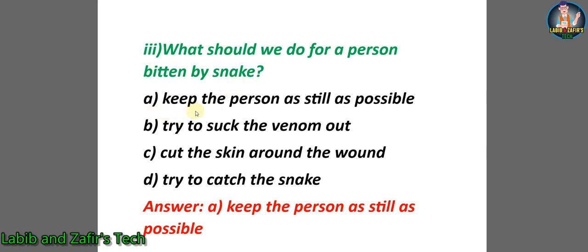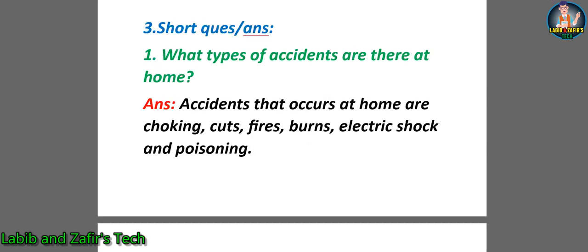Number three: What should we do for a person beaten by a snake? A) Keep the person as still as possible. B) Try to suck the venom out. C) Cut the skin around the wound. D) Try to catch the snake. The correct answer is A: Keep the person as still as possible.